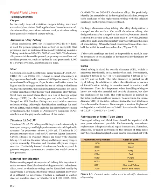When the band consists of two colors, one half the width is used for each color (Figure 9-1). If the code markings are hard or impossible to read, it may be necessary to test samples of the material for hardness by hardness testing.